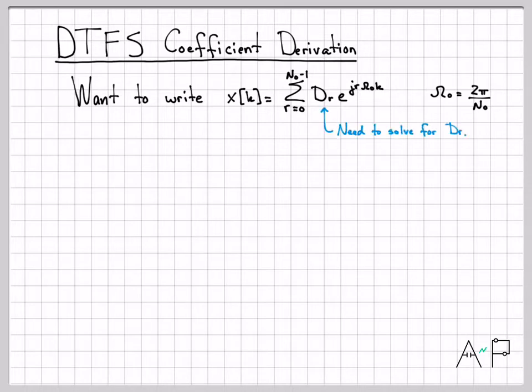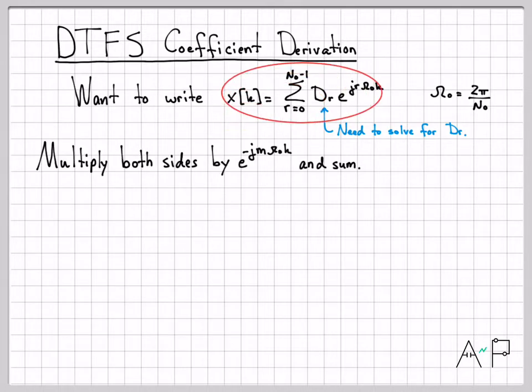And we're going to try to isolate or solve for Dr. So how am I going to do that? Here's what I'm going to do. Let's take this equation right here that we know is equal to each other, x[k] equals the sum. Let's do the same operation on both sides of the equation, which is a totally fair thing to do. As long as you do the same thing to both sides of an equation, you still have equality. What I'm going to do is multiply both sides by this term, and then I'm going to do a summation. So on the left side, I have x[k]. I'm going to go ahead and multiply that by e^(-jmω₀k), and then I'm going to do a summation over all k.